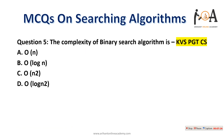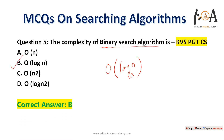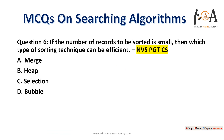Question five: the complexity of binary search algorithm is O(log₂n). The base is 2 because binary search divides the search space in half at each step. Option B is the correct answer. This is a KBSPGT CS question.